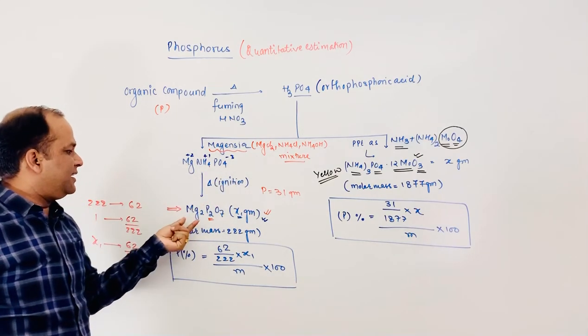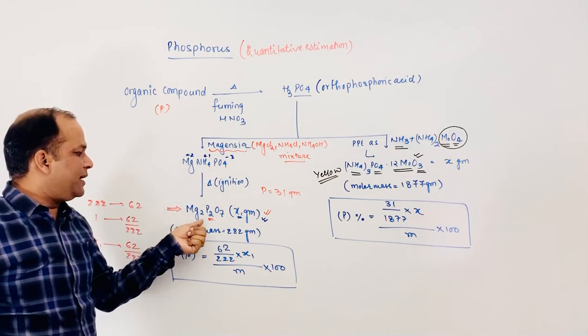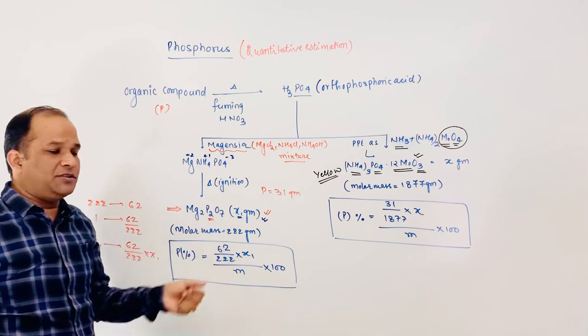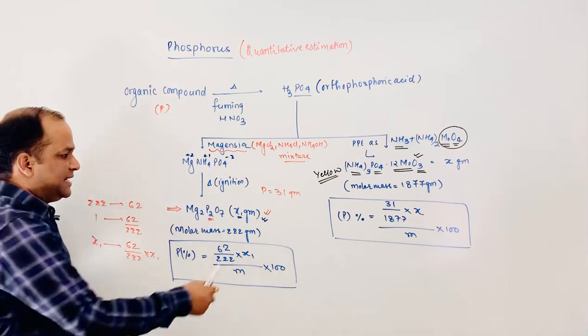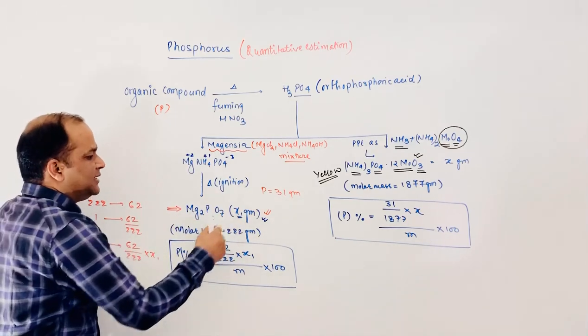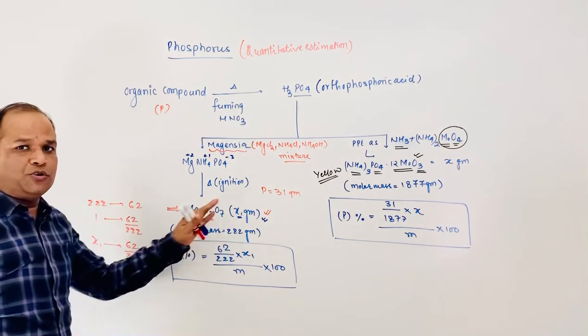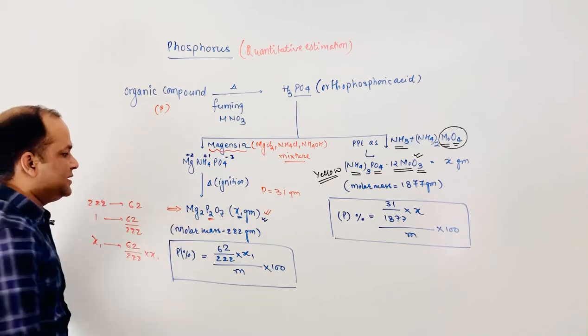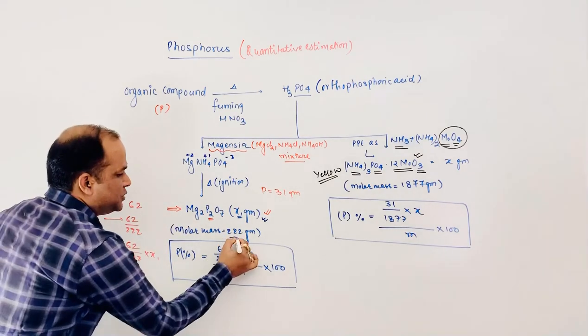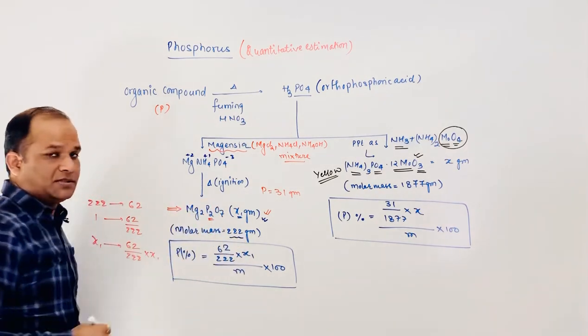When MgNH4PO4 is heated, it is converted into Mg2P2O7, and suppose X1 grams is obtained. A very important point is that the molar mass of Mg2P2O7 is 222 grams.